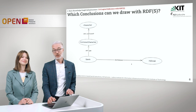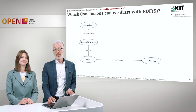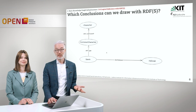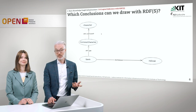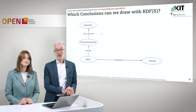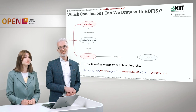Which conclusions can we draw with the help of RDFS? Let's have a look at a rather simple model. We have here Spock, who has birthplace Vulcan, and Spock is of type fictional character, which is a subclass of character. So just the thing we have seen previously in Turtle. Sascha, what can we do with it? I would say that Spock is also of type character.